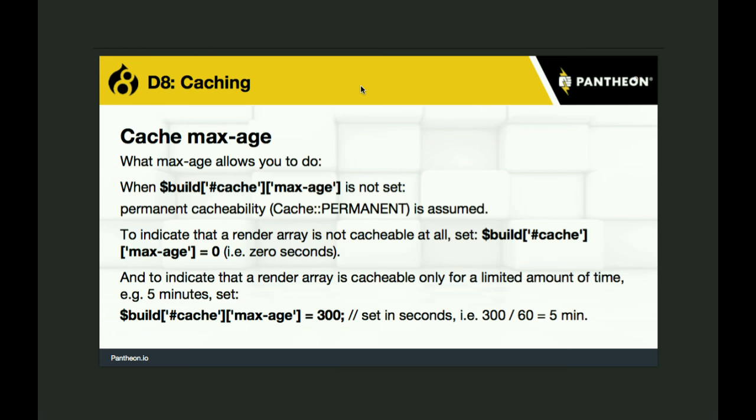You can also cache things and invalidate them based on time — every five minutes, every hour, every three days, or set it to zero to never expire. You can have a cache get invalidated because the user changes or the URL changes, or have a cache invalidate in five minutes, and you can do both at the same time. So if the user doesn't change but five minutes go by, the cache gets destroyed and rebuilt on the next request anyway.